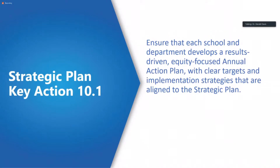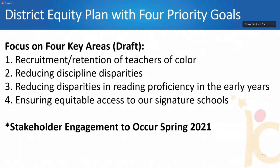Moving to key action 10.1, this asks that schools align their plan to the upcoming equity plan. At the last update I shared that we have four draft key areas: one, recruitment and retention of teachers of color; two, reducing discipline disparities; three, reducing disparities in reading proficiency in the early years; and four, ensuring equitable access to our signature schools. We've sifted through an awful lot of data and these are draft areas because we want stakeholders to endorse them through the engagement process.